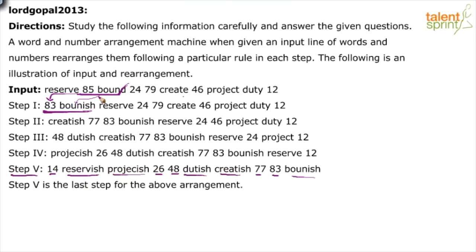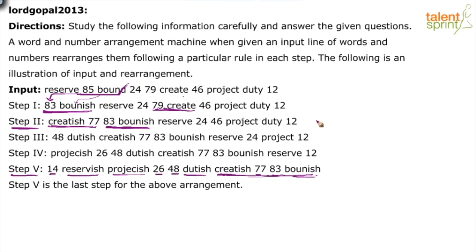In step 2, 83 and boundish are moved inside, and create and 79 are brought forward. Create-ish and 77 appear — 'e' is removed from create and 'ish' added; 79 minus 2 gives 77. Why choose create and 79? Because looking at the output, boundish and create-ish come toward the end, and 83 and 77 follow the ascending order. Elements are brought to the beginning of each step so they fall into place at the end.